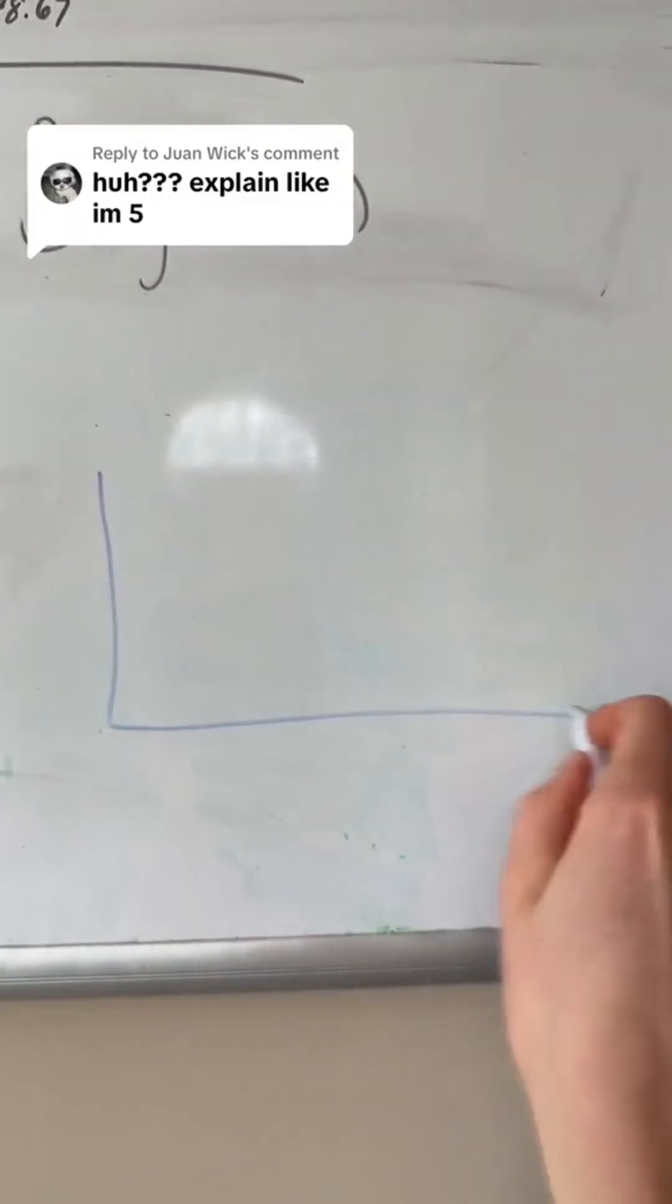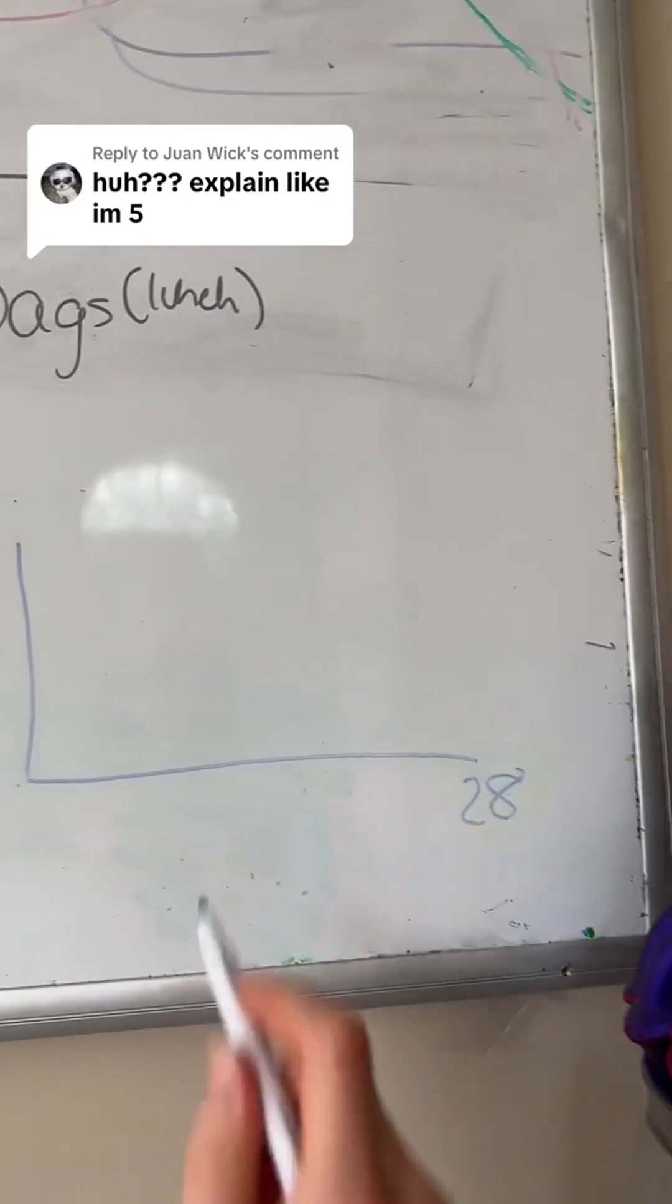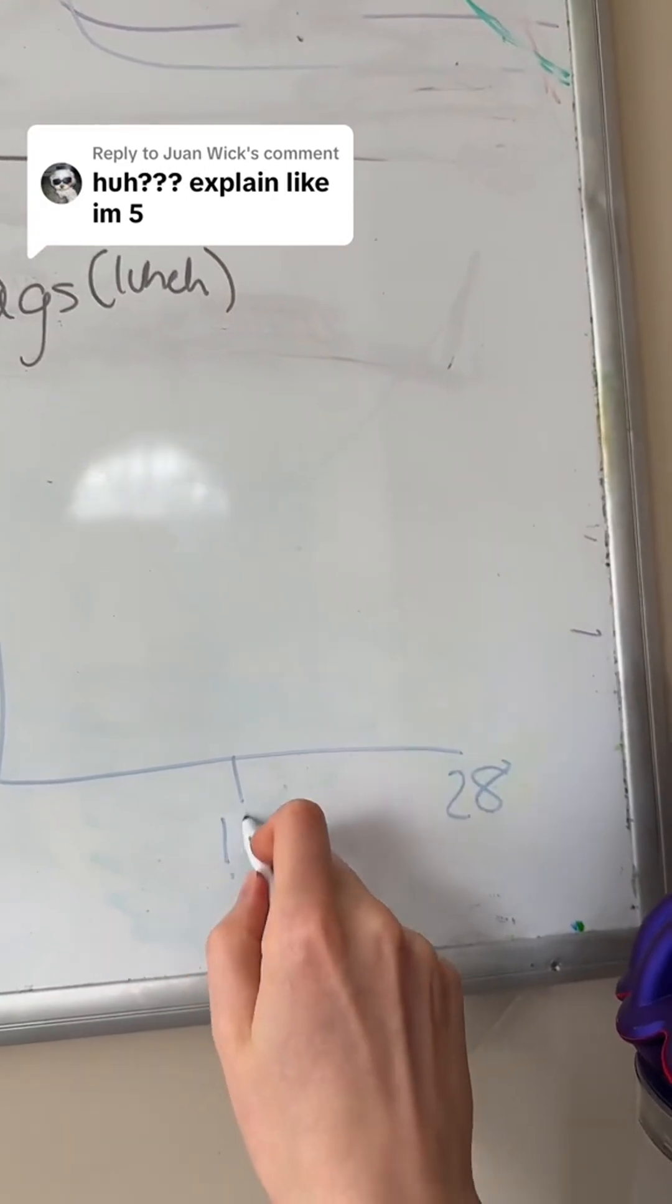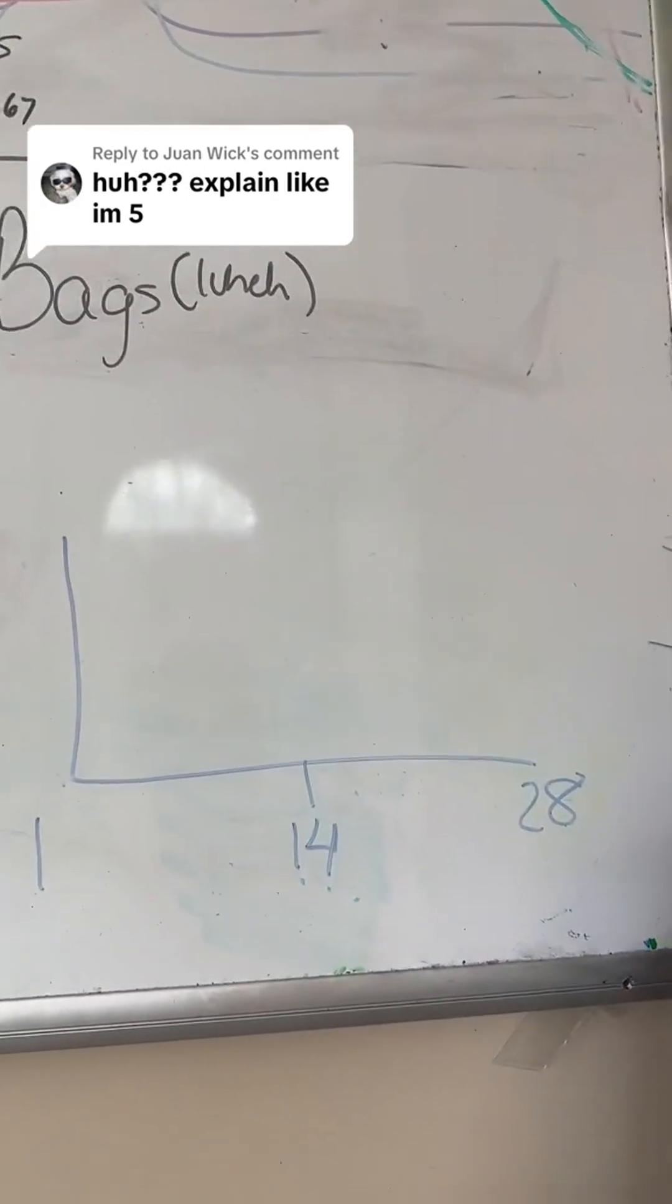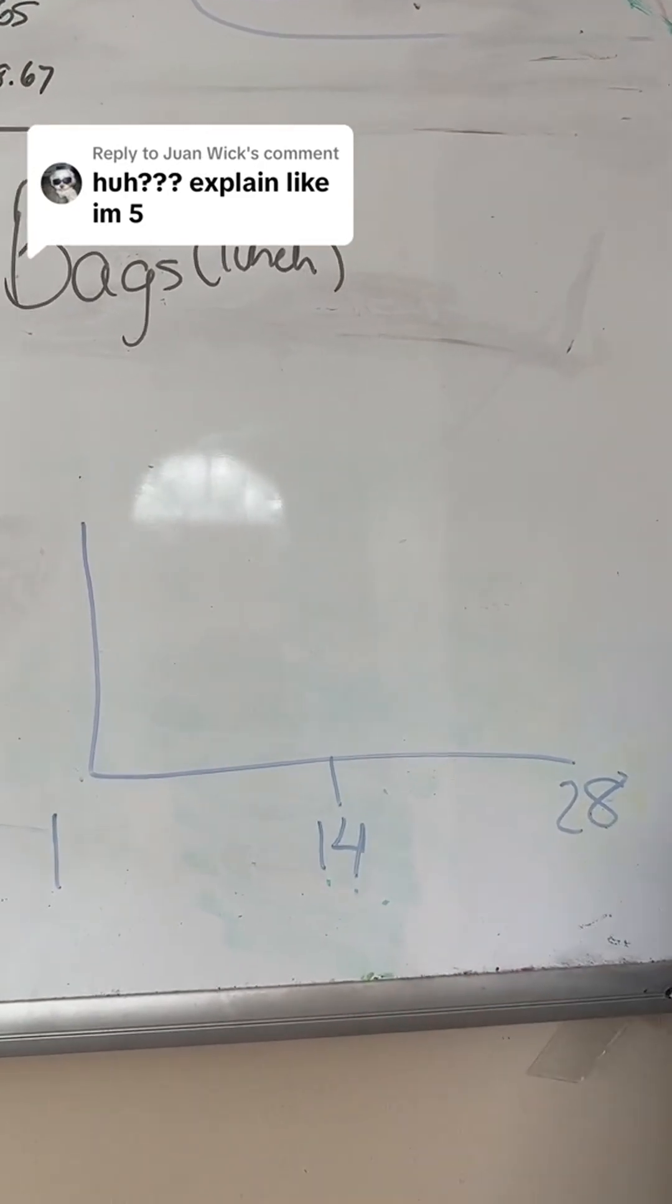Okay, this is your menstrual cycle, day one to 28, because it's the easiest to understand. In the middle of your cycle, day 14 will be ovulation. We say this because you likely will have two weeks between ovulation and your period.